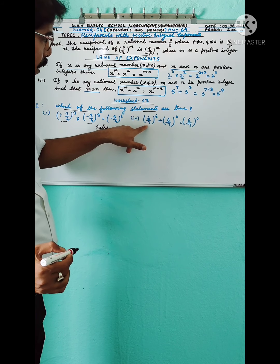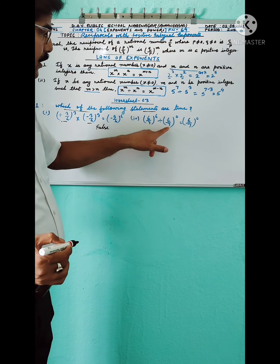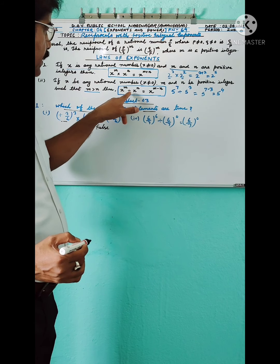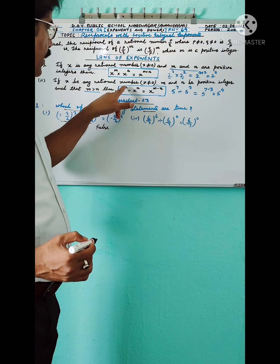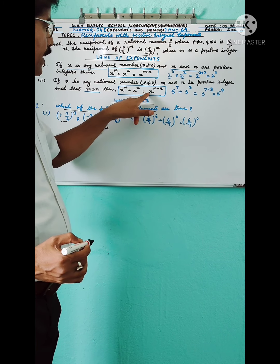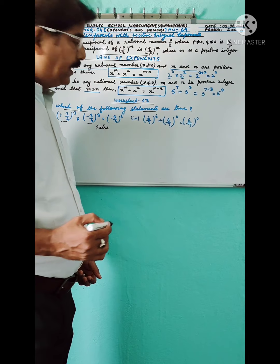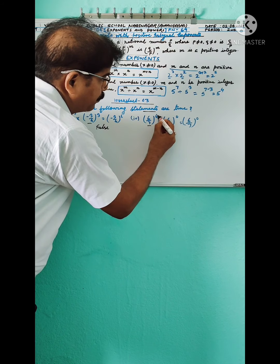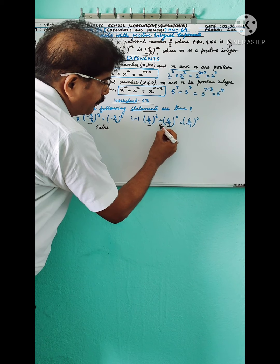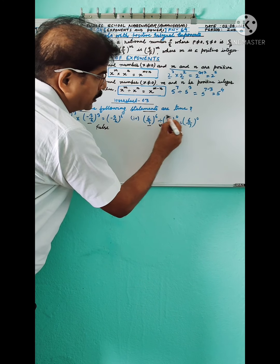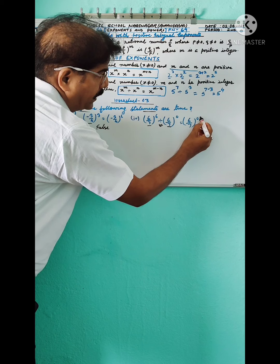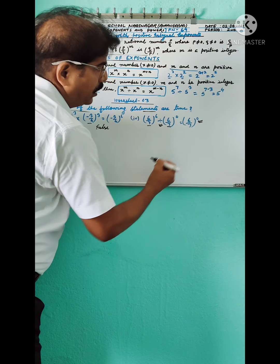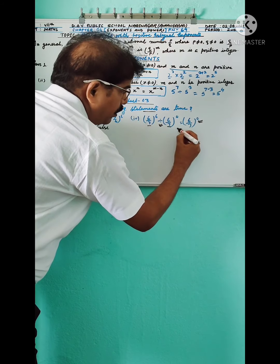Question 4: Is (6/7)^6 ÷ (6/7)^0 = (6/7)^6? Applying the division law x^m ÷ x^n = x^(m−n): the bases are the same, so the exponents subtract to give 6 minus 0 equals 6. However, the given answer shows 0 in the exponent, so the statement is false.